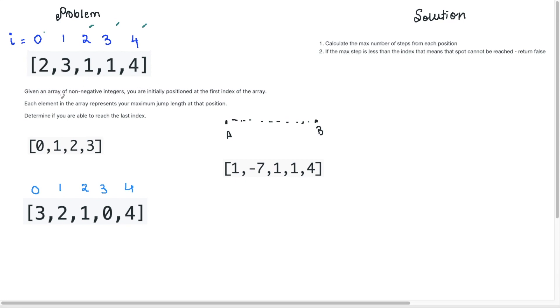So the question is, given an array of non-negative integers, you are initially positioned at the first index of the array. So we are positioned over here. This is our starting point. And each element in the array represents your maximum jump length at that position. So if I'm here, I can jump two spots from here. So that's what this number represents here. So that's the jump size. And we have to determine if we're able to reach the last index.